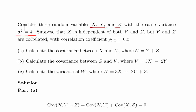Suppose that x is independent of both y and z, and that y and z have a correlation coefficient of rho_yz equals 0.5. Those are two key identities to get started with.